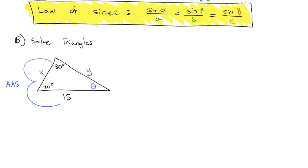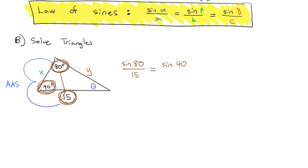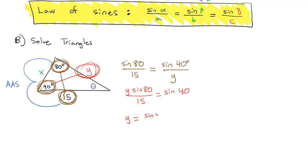As we solve, the important thing to note is that we know an angle and its opposite side. So sine of 80 divided by 15 equals sine of 40 divided by y, where y is opposite the 40-degree angle. Solving for y, we multiply both sides by y to get it out of the fraction, giving sine of 80 over 15 equals sine of 40. Then we multiply by the reciprocal 15 over sine of 80.